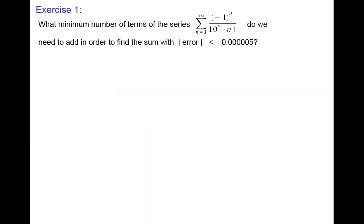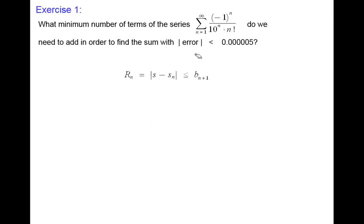Exercise number one: what minimum number of terms of the series — the summation from one to infinity of negative one to the n over 10 to the power of n times n factorial — do we need to add in order to find the sum with the error less than 0.0000005? We know that the error is less than the next term, and we need to find the minimum number of terms.